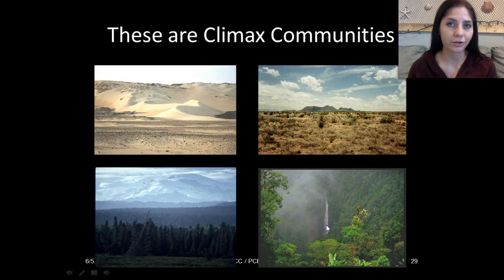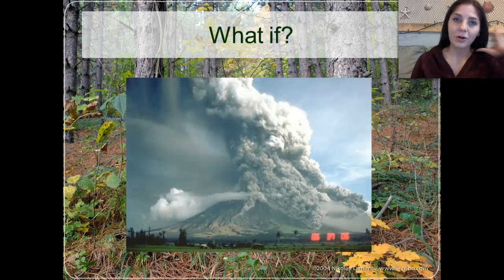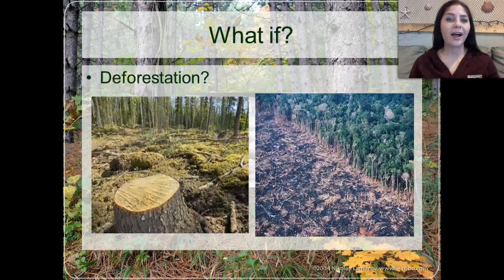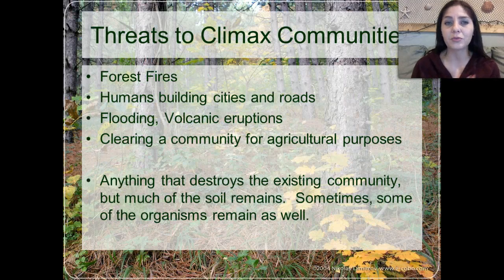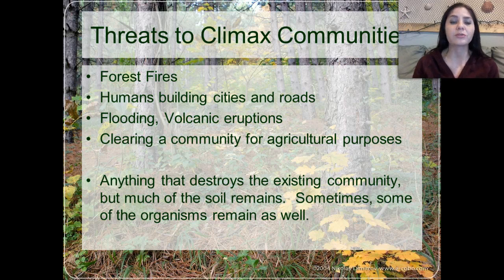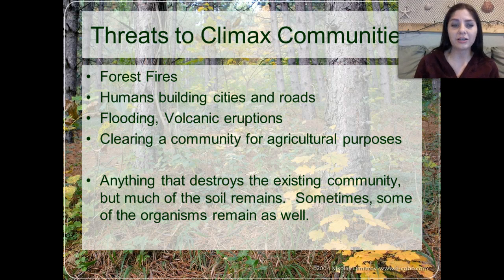But what if — forest fire, volcano, avalanche, deforestation? Basically, threats to climax communities include forest fires, human building cities and roads, flooding, volcanic eruptions, clearing a community for agricultural purposes so we can grow wheat or corn — anything that destroys the existing community.